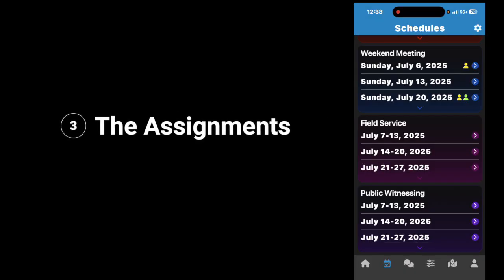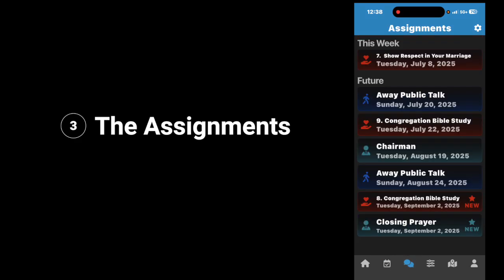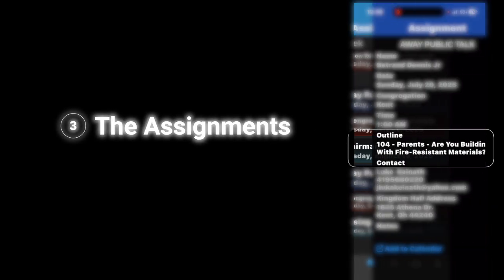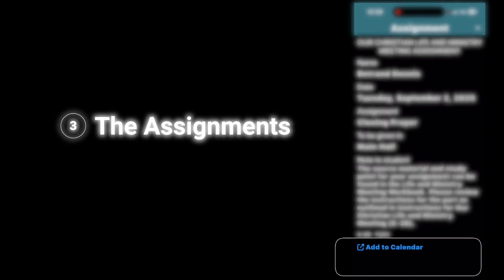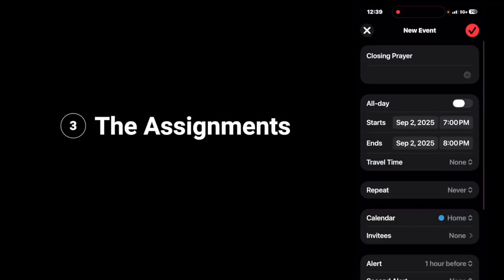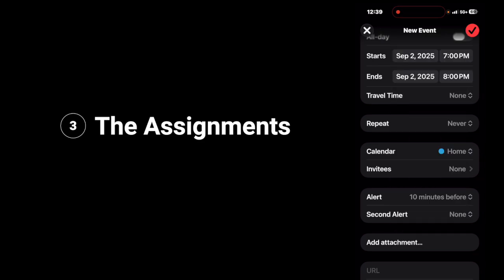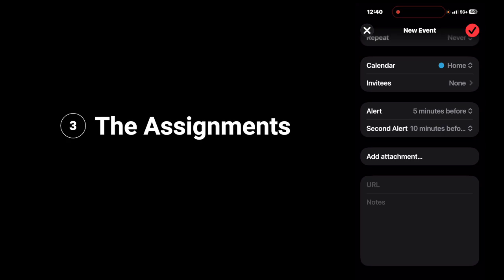Next up, we're going to look at assignments. Tap on the speech bubble, and this is going to take you to the assignments. This week is the top one — it shows that I have an assignment: 'Show Respect in Your Marriage,' Tuesday, July 8th, 2025. Under future, it shows that I have an away public talk on Sunday, July 20th. If you tap on it, it'll give you the information for the talk, and you can add it to the calendar by tapping Add to Calendar at the bottom. Then you can choose all day or a specific start time, add travel time, have it repeat, choose which calendar, invite someone, set an alert, do a second alert, and add attachments.